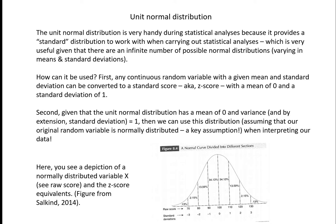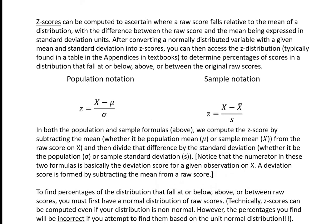Assuming your original raw score variable is normally distributed, you can make the conversion to a z-score and then enter the z table or the unit normal distribution when interpreting your data. This depiction is from Neil Salkin's 2014 book, Statistics for People Who Think They Hate Statistics. It shows the same normal curve, with raw scores and standard deviation units on the x-axis. Z-scores can be computed to ascertain where a raw score falls relative to the mean of a distribution, with the difference expressed in standard deviation units.